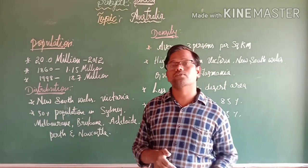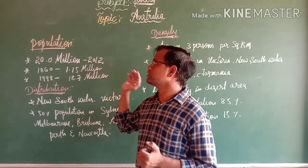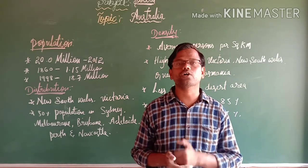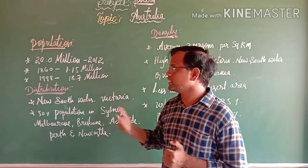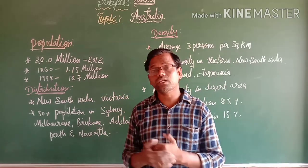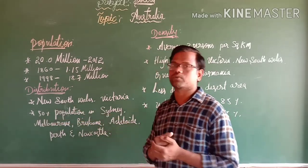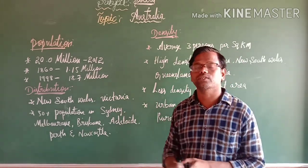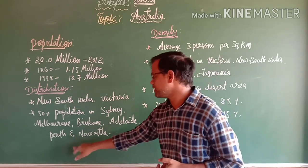Australia is the smallest continent in terms of population. In 2012 it had 20.0 million people, accounting for only 0.31 percent of the world's population. In 1860 it had 1.15 million, and in 1998 it had 18.7 million, indicating steady population growth. About 50 percent of the population lives in six capital cities: Sydney, Melbourne, Brisbane, Adelaide, Perth, and Newcastle.